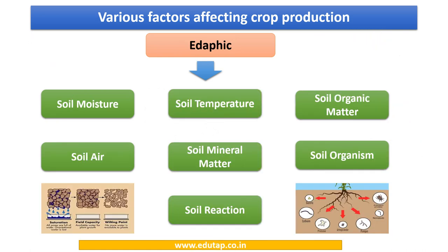These are the various edaphic factors that affect crop production, which we shall discuss in detail in a later video. They are: soil moisture, soil air, soil temperature, soil mineral matter, soil reaction, soil organic matter, and soil organism. Kindly keep these factors in mind.